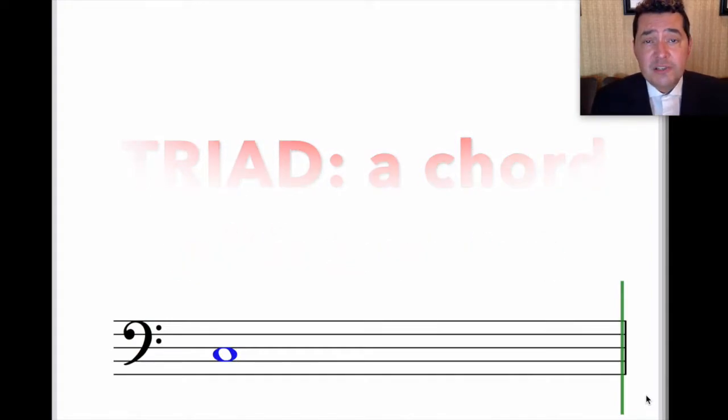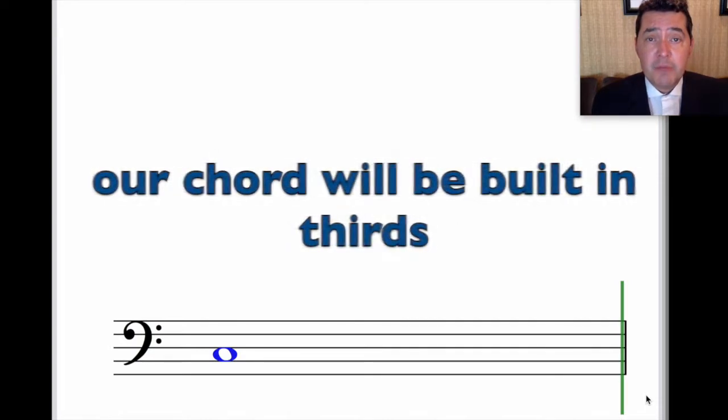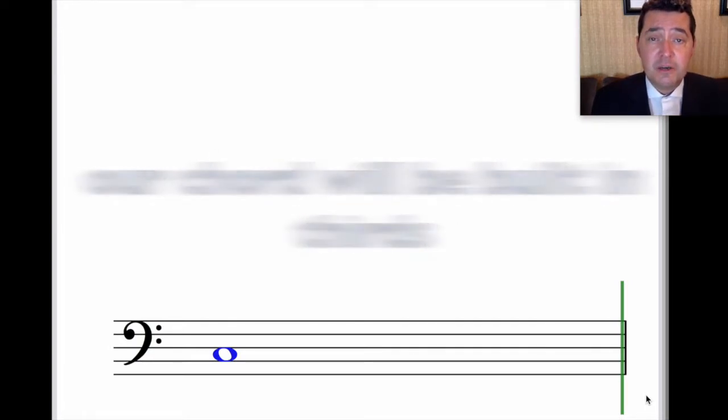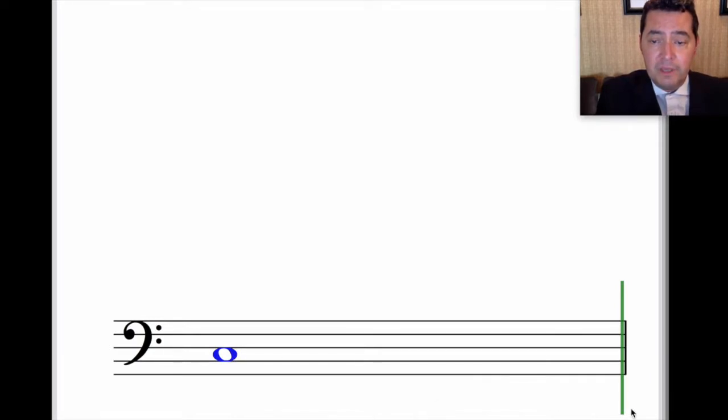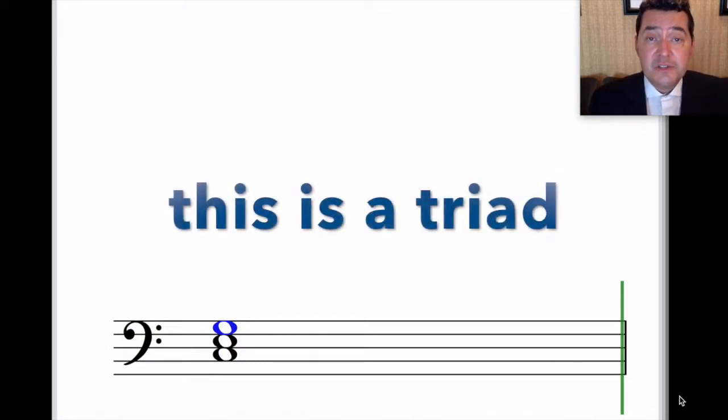Now, in the Western musical tradition, we usually build chords by stacking up thirds. In other words, we start from a particular note. In this case, we're starting on the second space of the bass staff with the note C3. And we're going to go up a third from C, C-D-E. Now, from E, we'll go up a third again, E-F-G. And now we have a chord with three notes, and they're stacked in thirds. This is a triad.